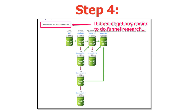It doesn't get any easier to do this type of funnel research. For this particular funnel, we can see it starts off with a VSL that leads to an upsell, another upsell, and then a third upsell. Now if we look at that first upsell — if they say no to that, there's a downsell, then another downsell, then another downsell. This person has multiple upsells and downsells to get the maximum amount out of this funnel. The reason this funnel is so complex is because it works — and they've literally told us here's what their funnel looks like.